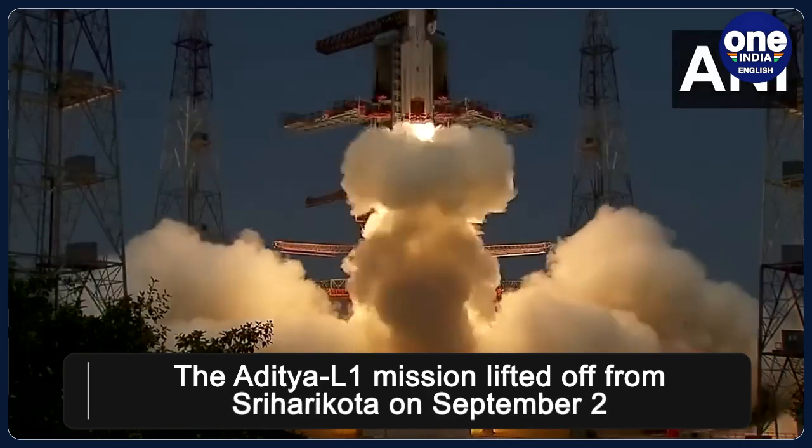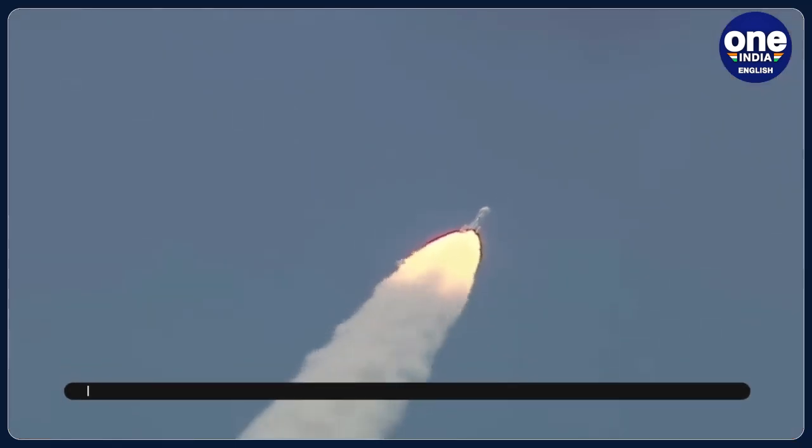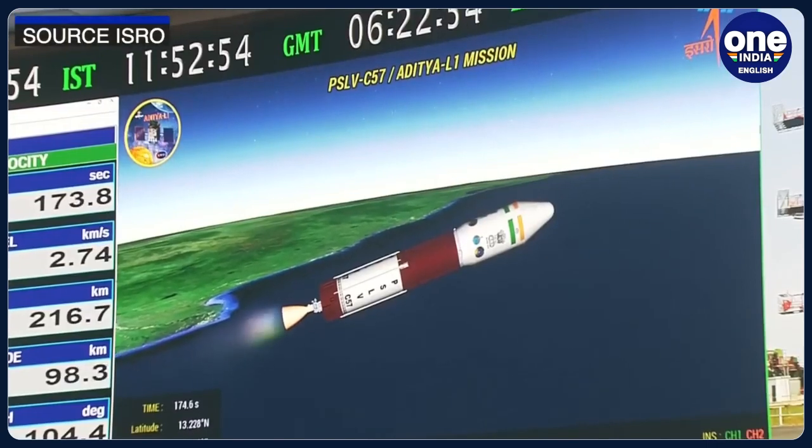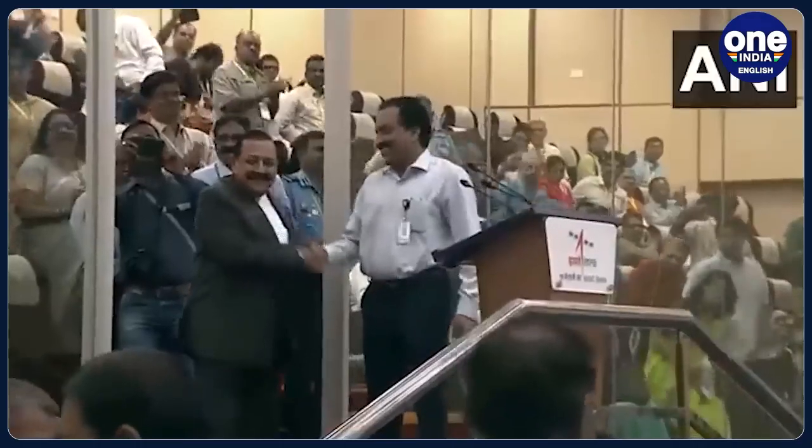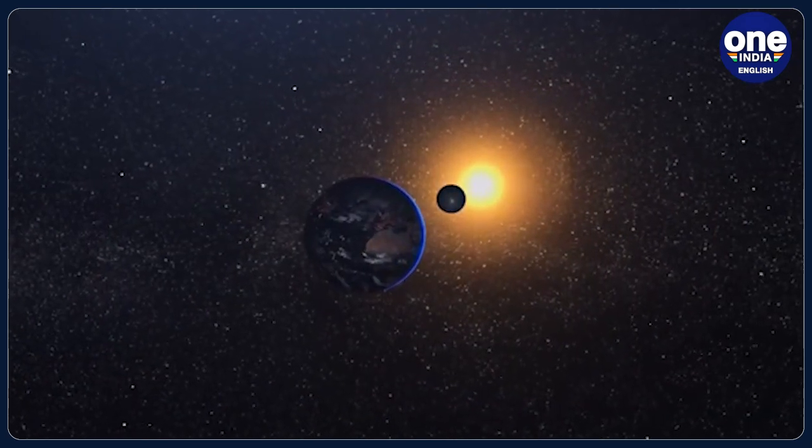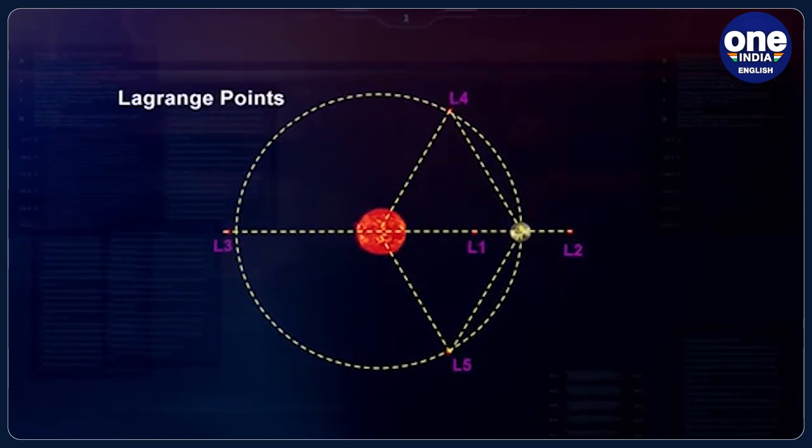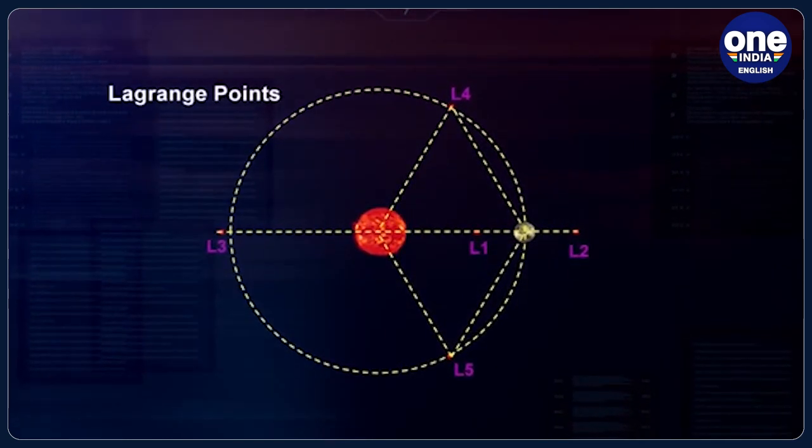The Aditya L1 mission lifted off from Sriharikota in Andhra Pradesh on September 2. The spacecraft has already completed two Earth-bound orbital maneuvers and will perform two more before placing it in the transfer orbit towards the Lagrange point L1. Aditya L1 is expected to arrive at the intended orbit at the L1 point after 125 days.